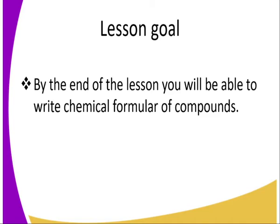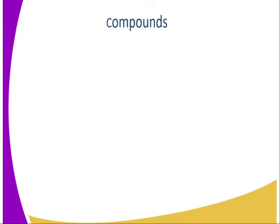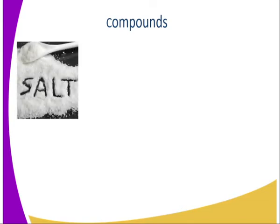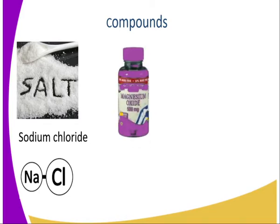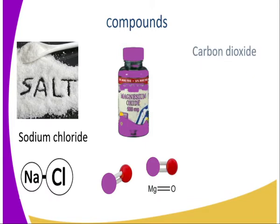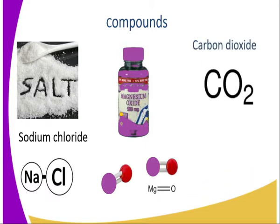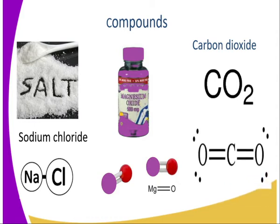How do we write the chemical formula of compounds, and why is this very important for us as chemistry students? Compounds range from different substances. We have salt — sodium chloride — that is a sodium atom and a chloride atom bonded together. We also have magnesium oxide, basically used mostly in manufacturing of antacid tablets, with magnesium bonded to oxygen. We also have other compounds that are gaseous, like carbon dioxide, which is in the atmosphere forming a percentage of 0.03%, and as you can see we have a carbon atom bonded to oxygen atoms.